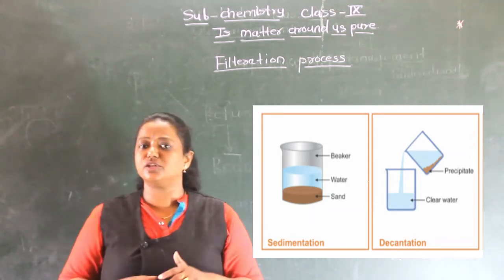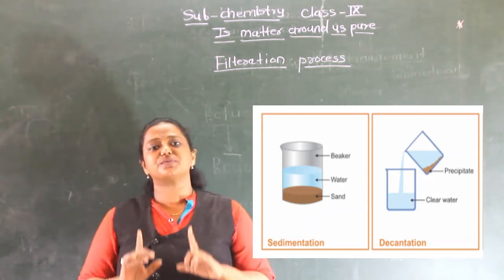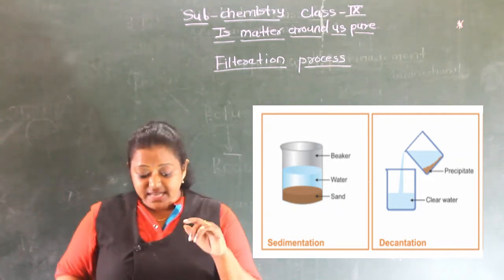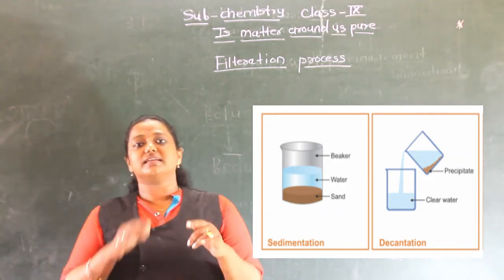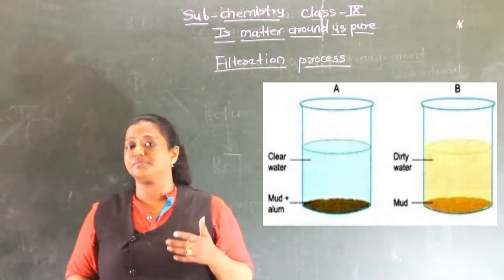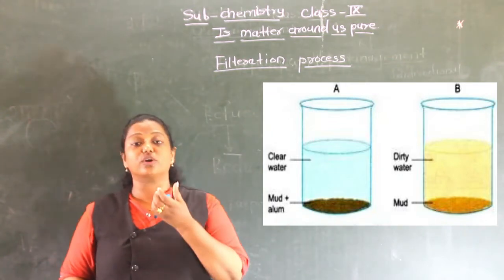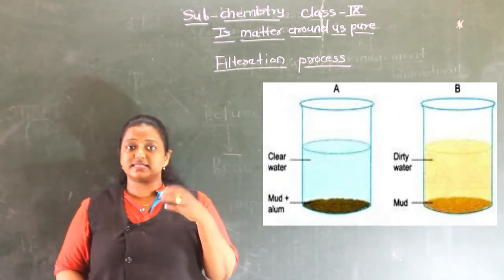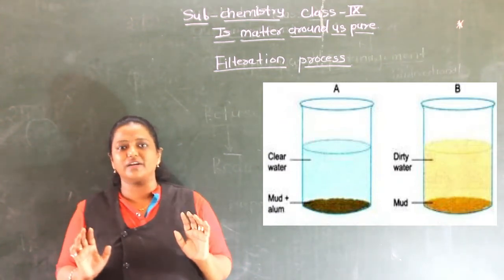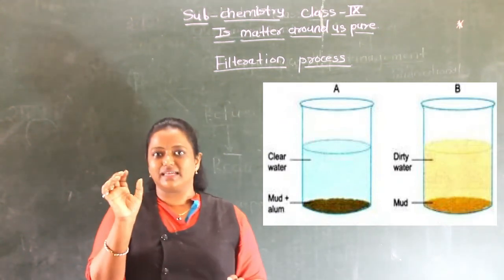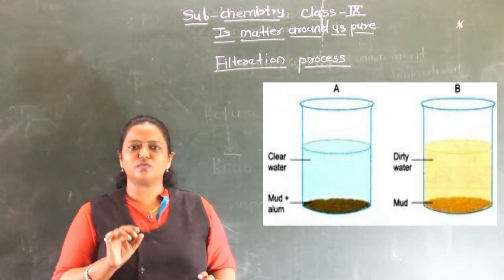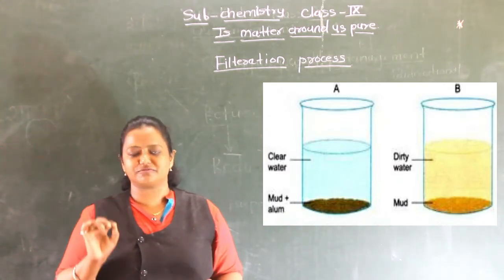You have already seen the process of sedimentation and decantation in your earlier classes. This sedimentation and decantation process can be made faster by using alum — sodium alum, which in Marathi is called 'turti.' It is milky-white in color. If you put a small amount of alum into the water, something interesting happens to the suspended particles.